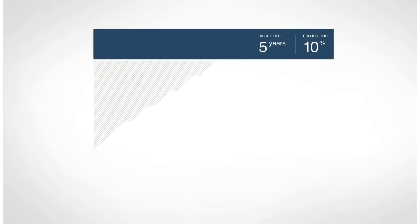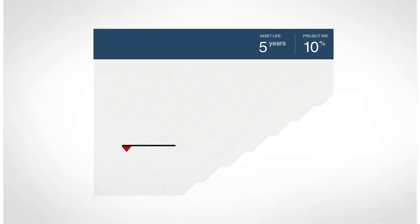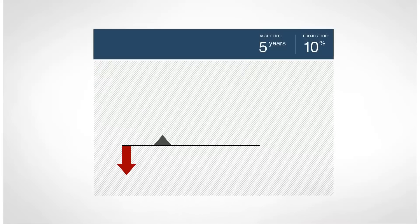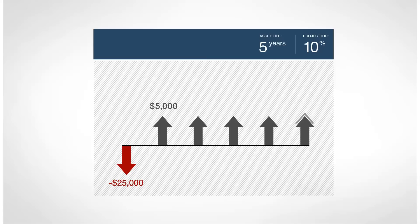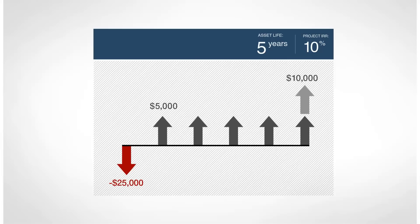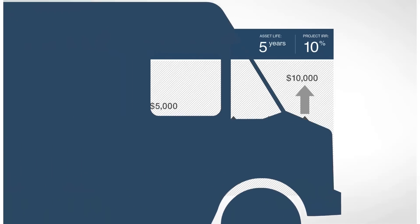When companies make an acquisition or expand into a new business line, they usually prepare an economic profile. For capital budgeting purposes, the profile forecasts all cash outflows and inflows over the estimated project life. An internal rate of return can then be calculated and is a proxy for the project's economic return.